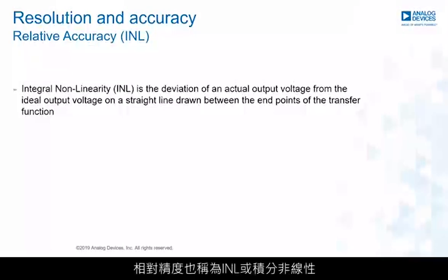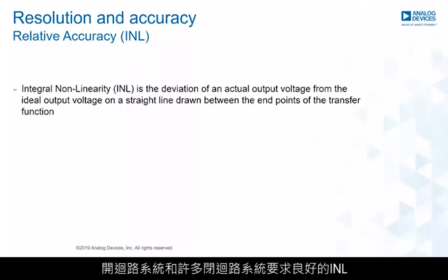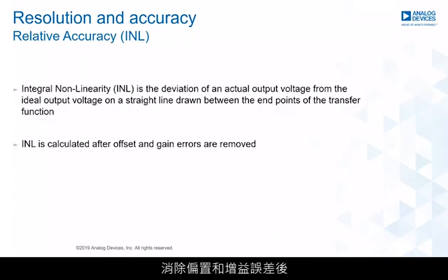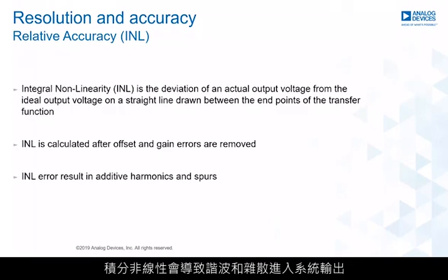Relative accuracy is also known as INL, or integral nonlinearity. Integral nonlinearity is the deviation of the actual transfer function from a straight line. Good INL is required for open-loop systems and many closed-loop systems. After removing offset and gain errors, this straight line is drawn between the endpoints of the transfer function. INL results in the addition of harmonics and spurs at the output of the system.